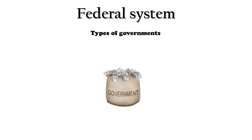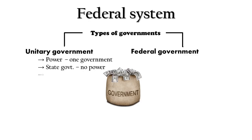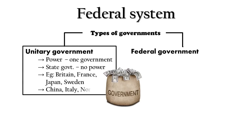Now we will see the types of governments. There are two types: unitary government and federal government. In the unitary type of government, only the central government is given power, and the state government has no power. Examples of unitary government are Britain, France, Japan, Sweden, China, Italy, and Norway.